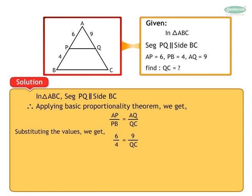Now, by cross-multiplying, we get 6 into QC is equal to 9 into 4. Therefore, 6QC is equal to 36. Therefore, QC is equal to 36 upon 6.